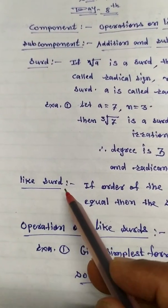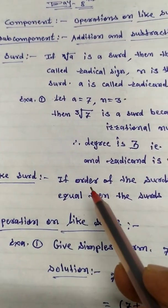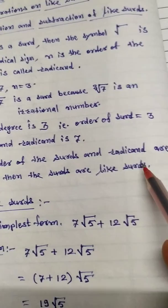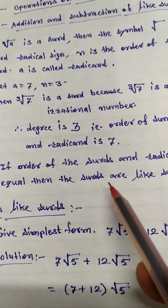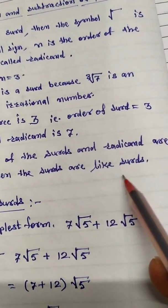Now what is like surd? Like surd means if the order of surd and the radicand are equal, then the surds are called like surds.